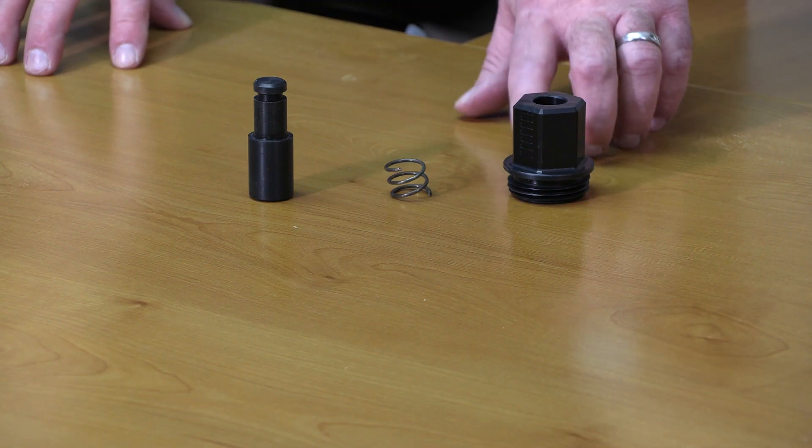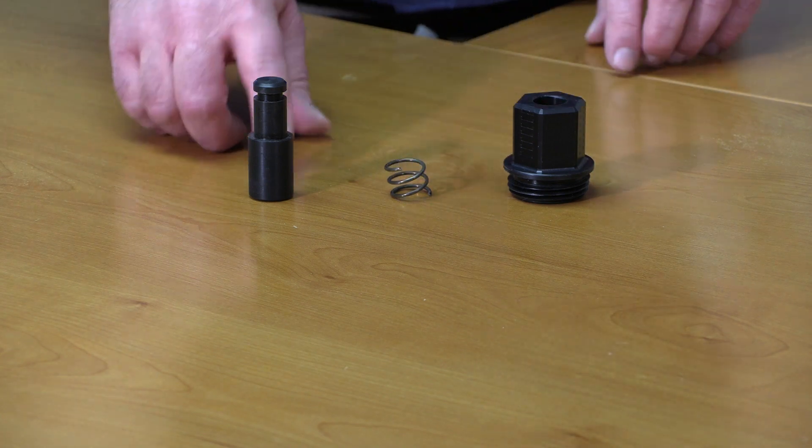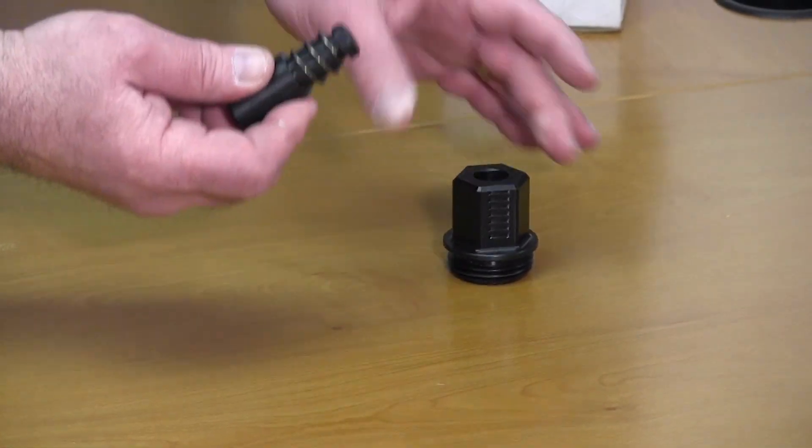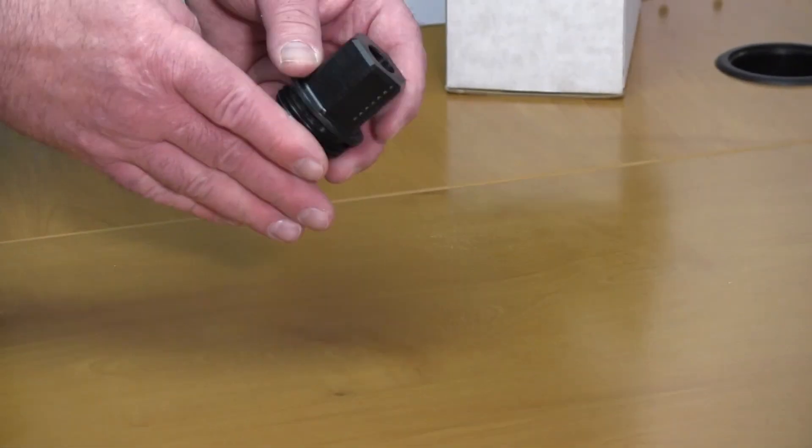The Activator assembly consists of the cap, the spring, and the plunger with the sear slot. Easily assembled: spring over the plunger, plunger into the cap.